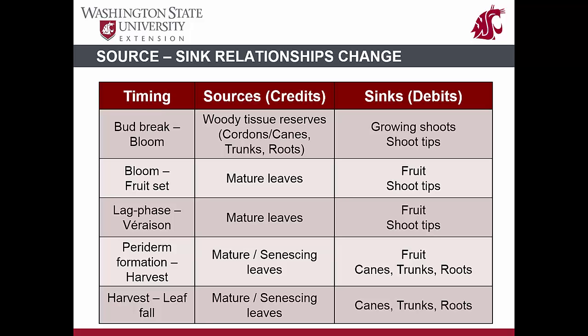From bloom until fruit set, the shoots will switch from being an energy sink to an energy source. Leaves are the dominant source of energy for the plant during this time period. During this time, the clusters are small energy sinks, and growing shoot tips are larger energy sinks. If the growing shoot tips are removed during this time, the energy is diverted to the clusters, and vice versa.